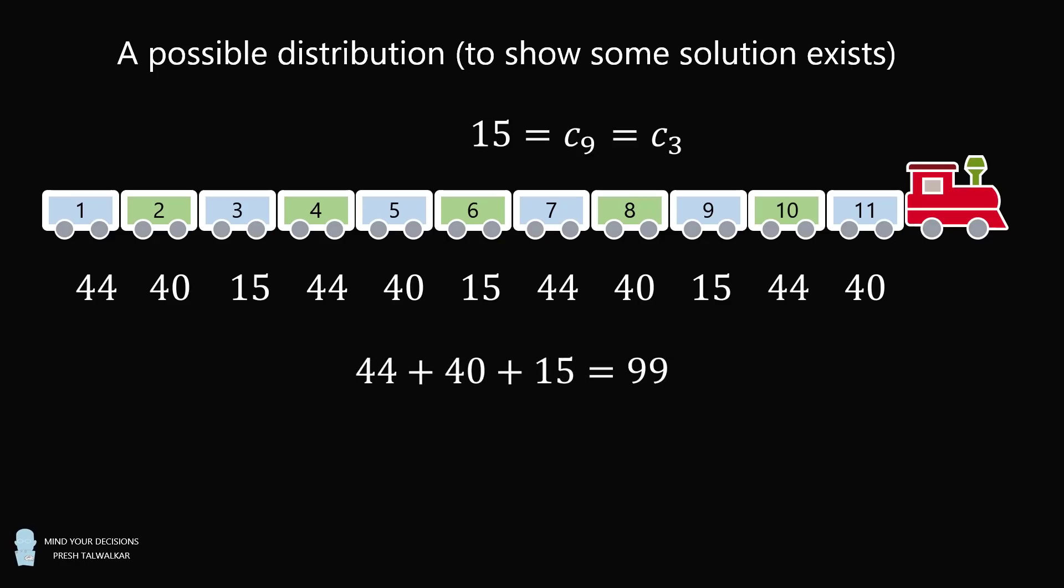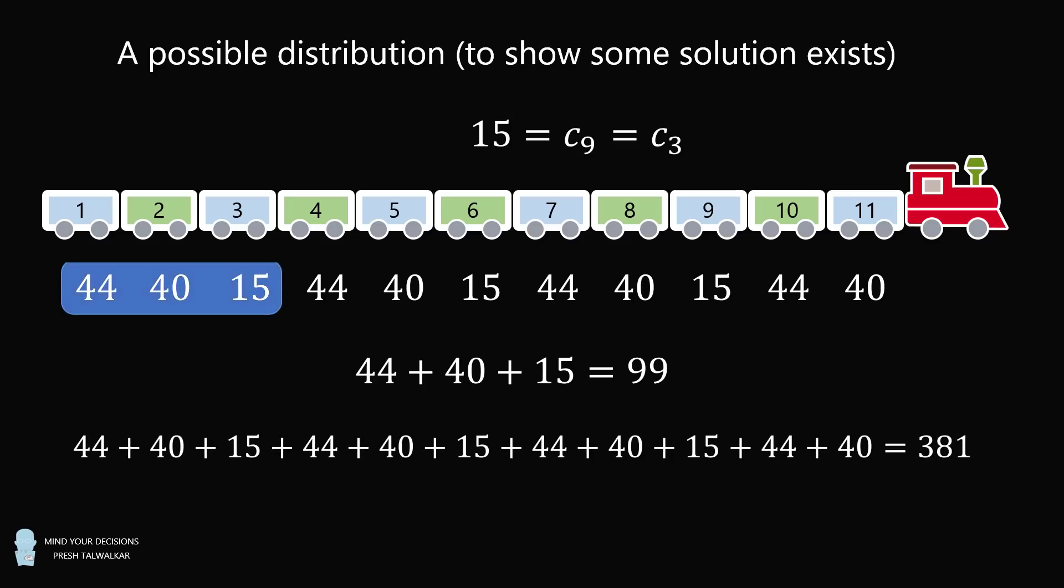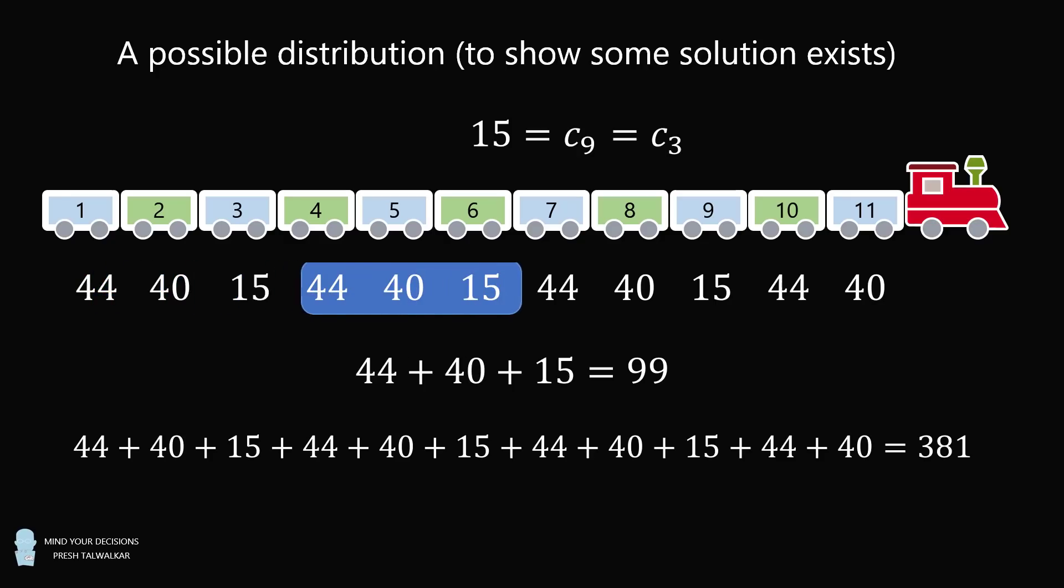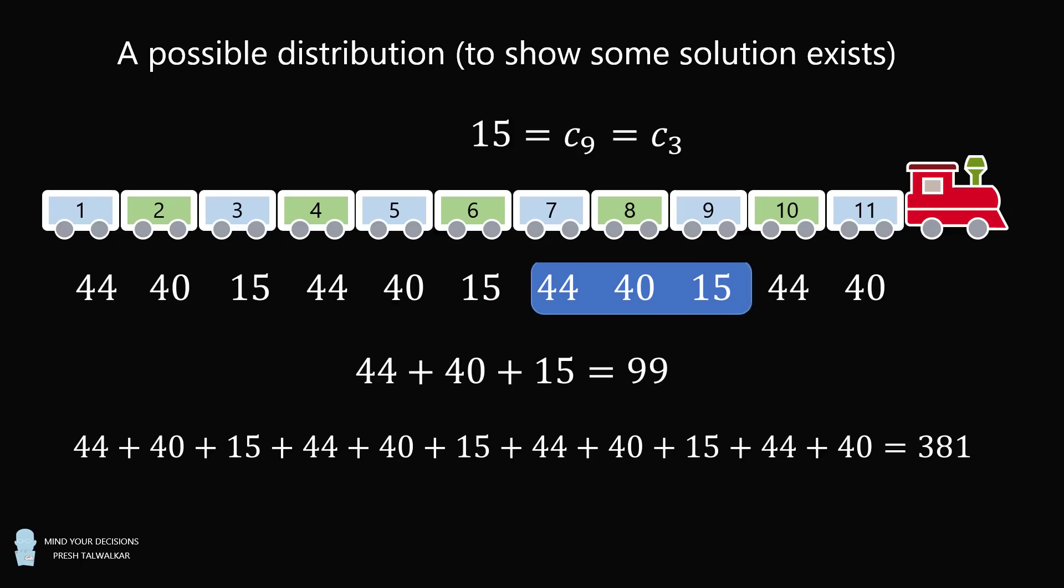Now, 44 + 40 + 15 = 99. So any three consecutive passenger carriages have a total of 99 passengers. And the sum of all these together is equal to 381. So we've demonstrated that some solution exists where any three consecutive passenger carriages have exactly 99 passengers and the total number of passengers is equal to 381.